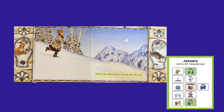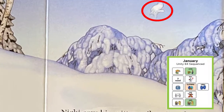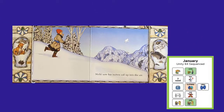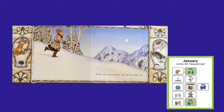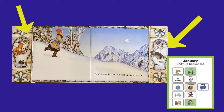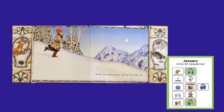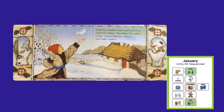Nicky saw his mitten sail up into the air. How do you think he felt when he saw his mitten? I bet he was really happy. I also wonder if he thought, how did my mitten get up in the air? I see the animals — they're all looking for somewhere else to go. From the window, Baba watched Nicky catch his mitten.